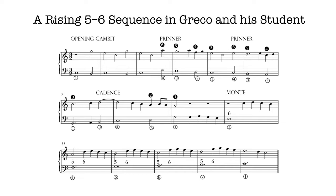There's an opening gambit, a printer, a riposte, then a modulating printer which takes us to G major, a cadence, and then a rising sequence which brings us back to C major. The rising sequence alternates the intervals of 6 and 5 above the bass. Let's listen to the first part of this.